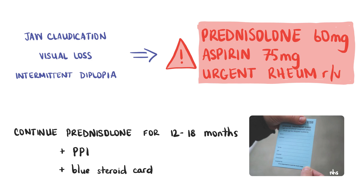If the patient presents with either jaw claudication, loss of vision, intermittent blurring or diplopia, immediately start treatment with prednisolone 60mg plus aspirin 75mg. Urgently refer the patient for a same-day review by a rheumatologist. If there are any visual symptoms, then a same-day ophthalmology review is essential. If the diagnosis is likely to be temporal arteritis but there are no visual symptoms or jaw claudication present, start the patient on 40mg of prednisolone and 75mg of aspirin, and refer to rheumatology to be seen within at least three days.